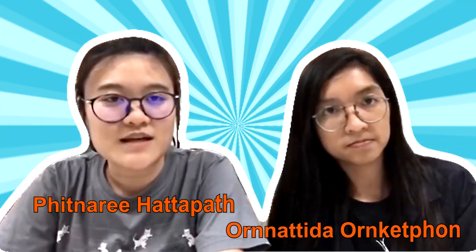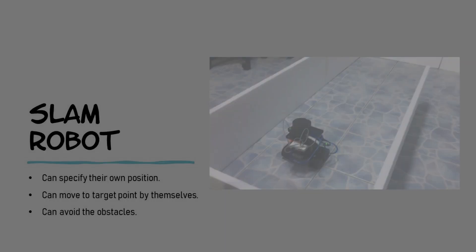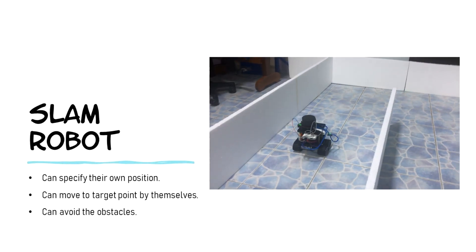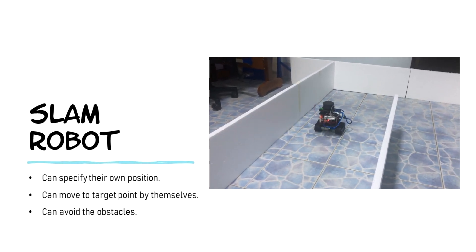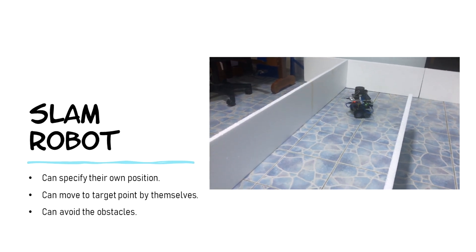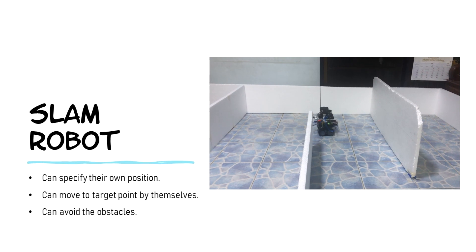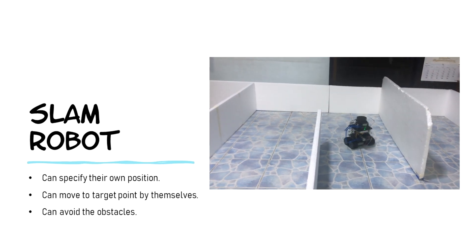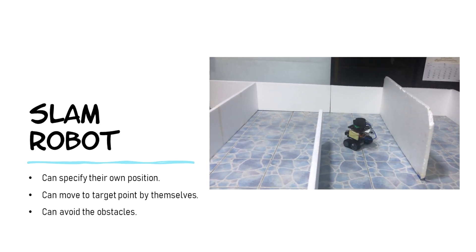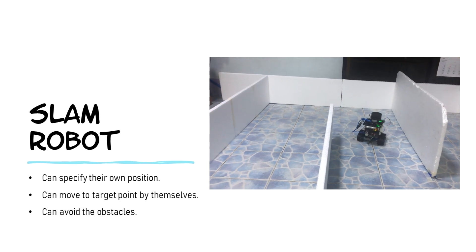Hello everyone! My name is Pinari Hatapath and my partner's name is Onatita. Today we're going to talk about how to do the SLAM Robot. The SLAM Robot is a robot that can specify its own position, can move to a target point by itself, and can avoid obstacles too.